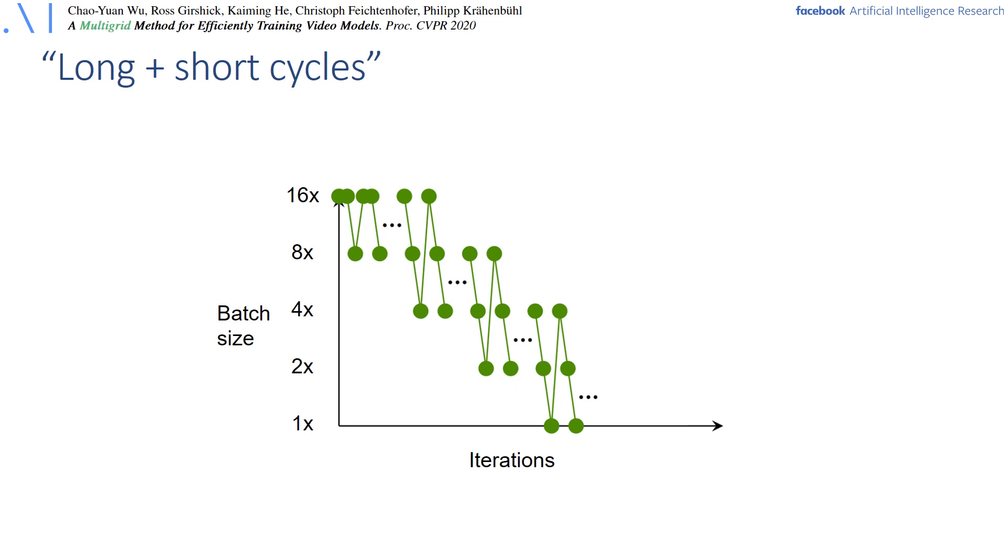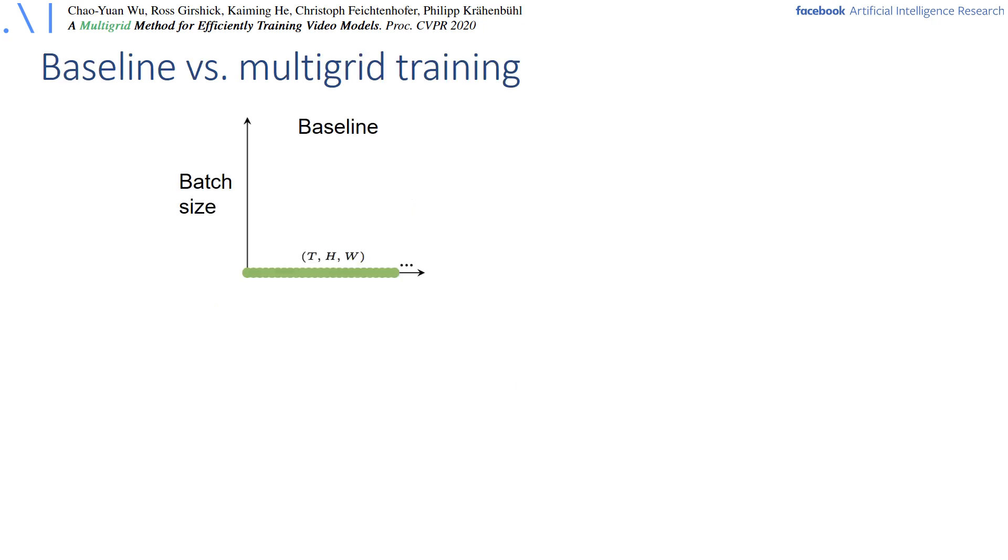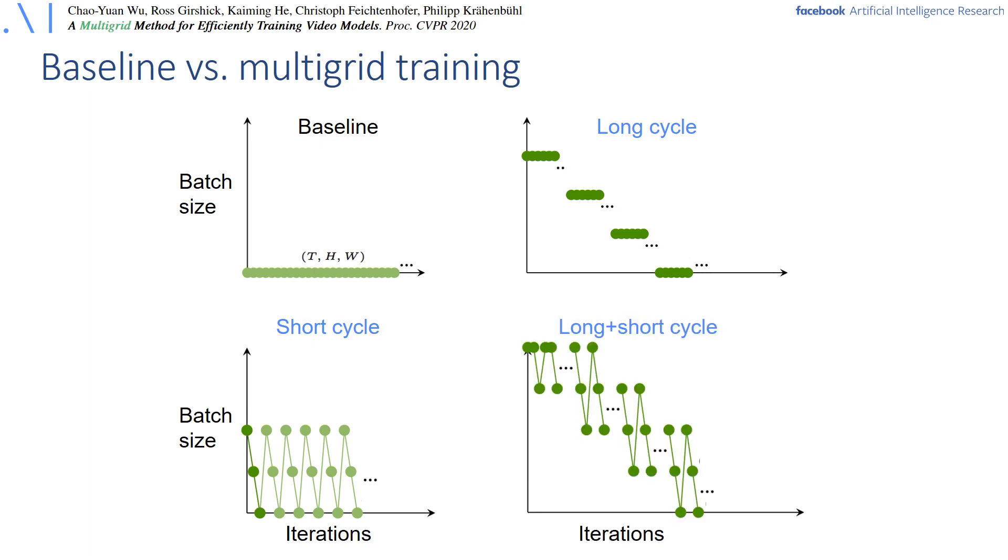If we use both the long and the short cycles combined, we end up with a multigrid training paradigm like this. So overall we have four cases: First the baseline method that uses a fixed batch size during training. Second, the long cycles which increase resolution over training both spatially and temporally. Third, the short cycles which quickly change the resolution each training iteration for a spatial input size. And fourth, the combination of the two which is our multigrid schedule combining long and short cycles.